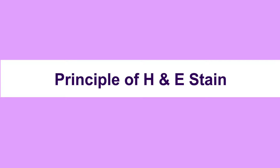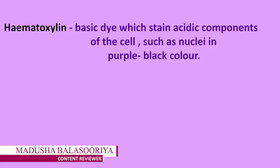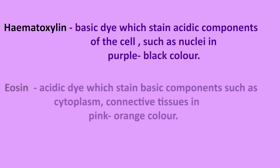The principle of hematoxylin and eosin stain: hematoxylin is a basic dye which stains acidic components of the cell, such as nuclei, in purple-black color. Eosin is an acidic dye which stains basic components, such as cytoplasm and connective tissue, in pink-orange color.